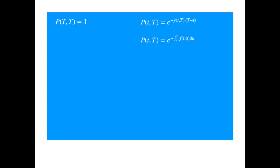Comparing the two expressions for the zero coupon price, the terms in the exponents must be equal. If we isolate y on the left-hand side, we see that the spot interest rate is an average of the instantaneous forward rate — recall that an integral means area, and area divided by the length of the interval means height.